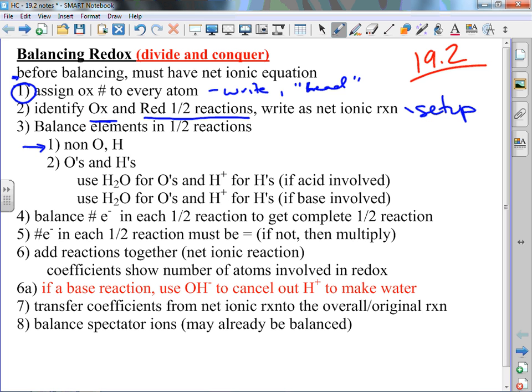Then we're going to balance oxygens and hydrogens. We're going to use water for oxygens, so if I don't have the right number of oxygens on both sides, I'm going to write in waters to balance them. Then I'm going to write in H pluses to balance any hydrogens that are not balanced. We do both steps if the reaction involves an acid or a base.